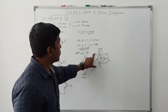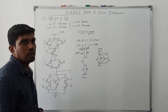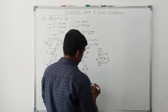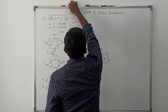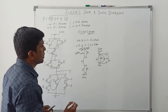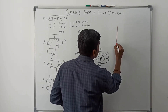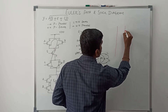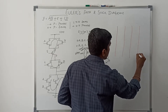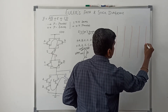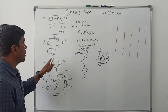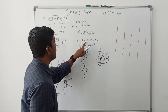Now I am going to draw the stick diagram for the given Boolean expression. In this Boolean expression, we have five transistors. So I draw five polysilicon lines. The red color represents polysilicon. The transistors are mentioned in the same order: A, B, E, C, D.